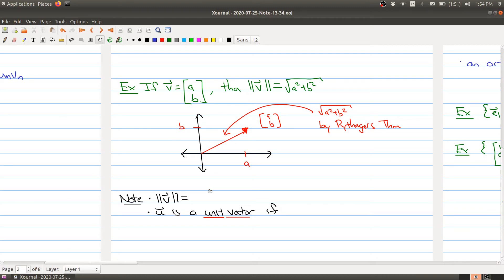A couple things that might be useful to note is that we can actually write the norm of a vector in terms of the dot product. We can write it as v dotted with itself and then taking the square root. That's another way of defining the norm. And we say that u is a unit vector if its length is 1.